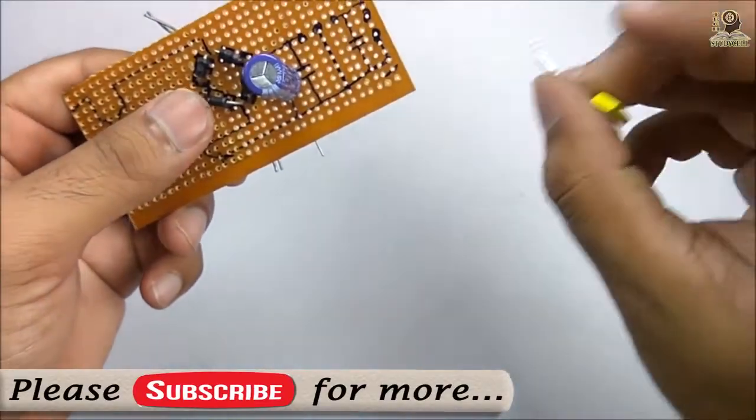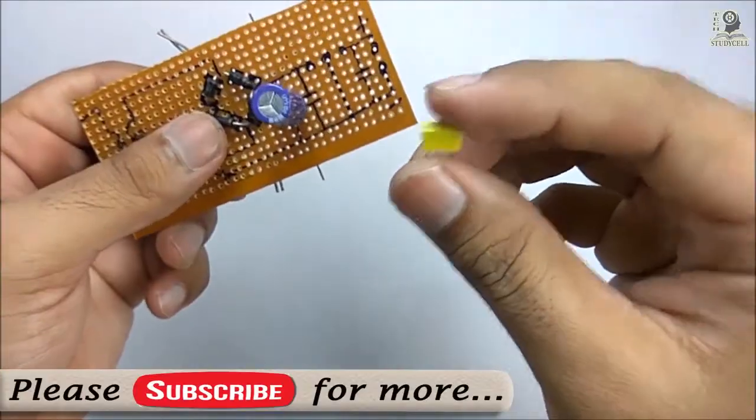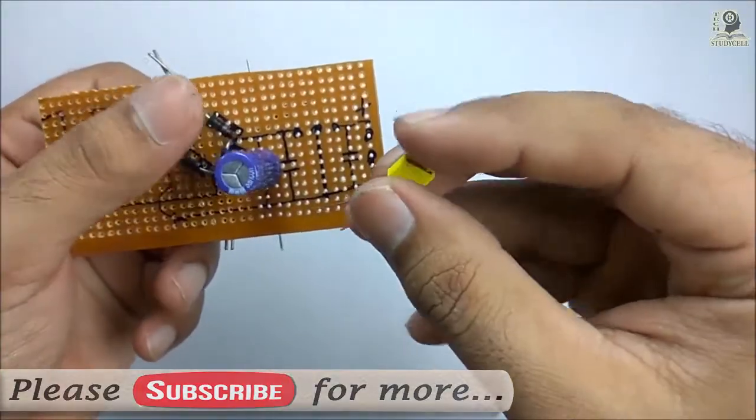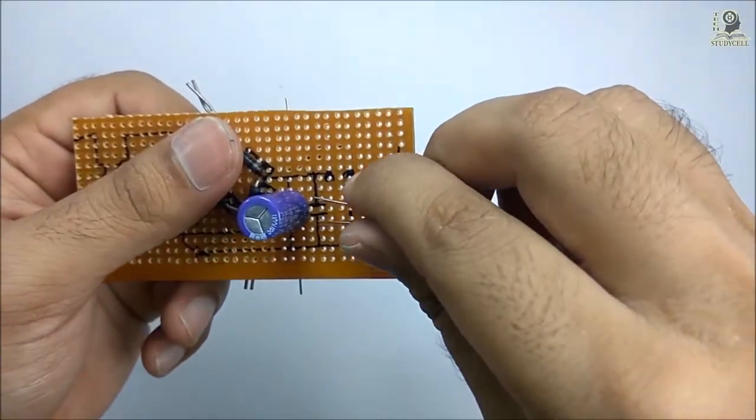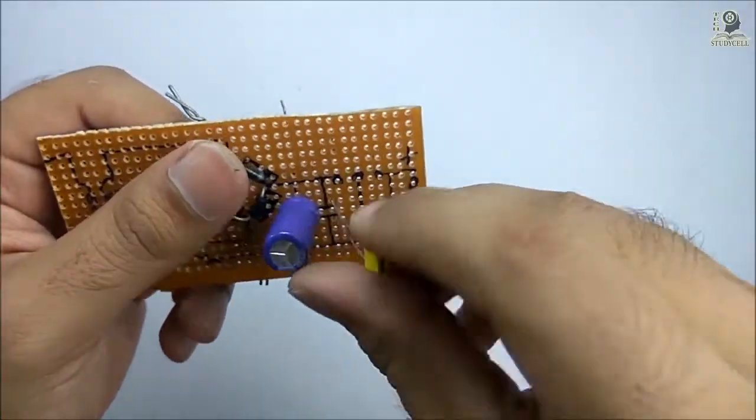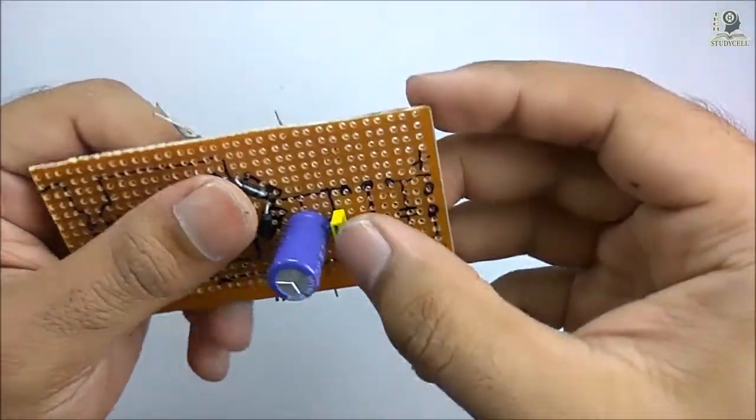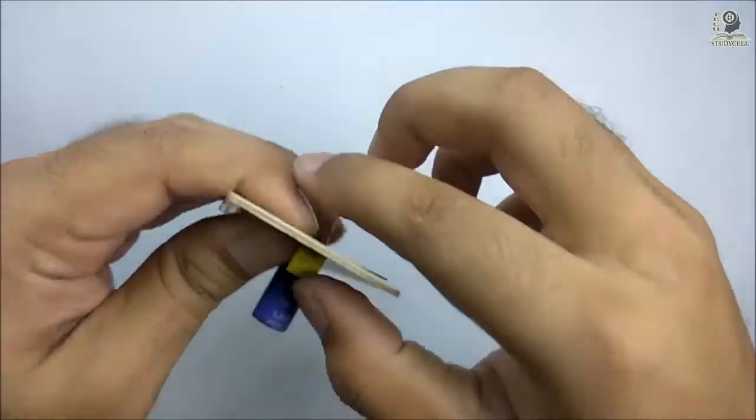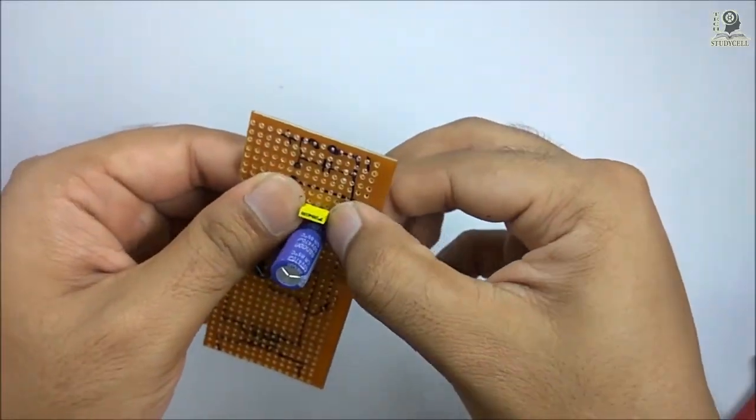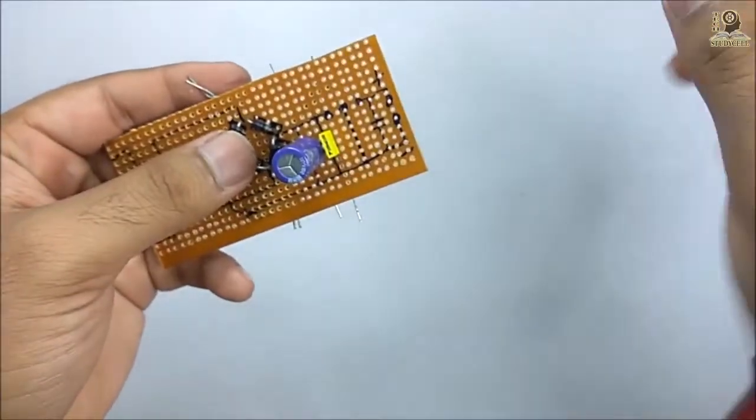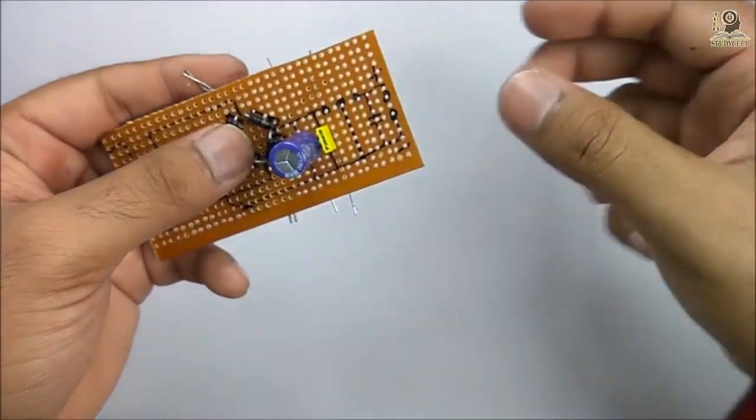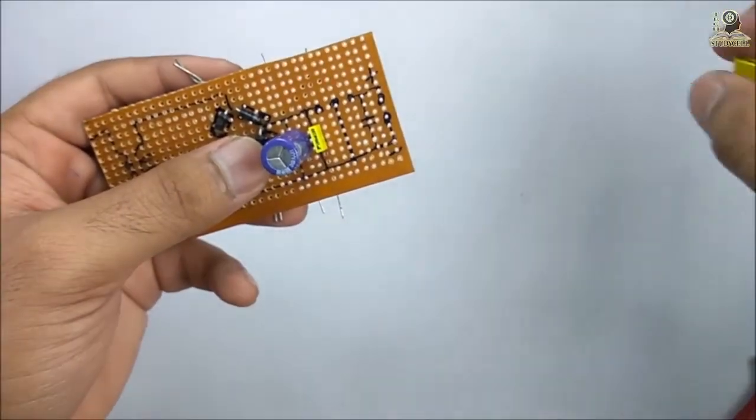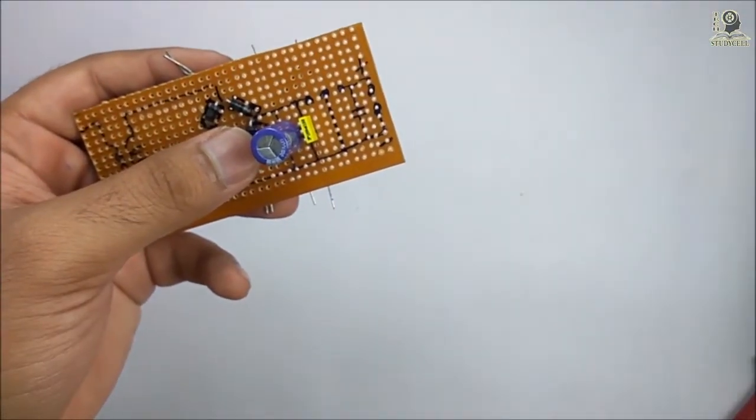After this electrolytic capacitor, I will place this AC capacitor of 0.1uF according to the schematic. This capacitor doesn't have any positive or negative terminal as this is an AC capacitor.